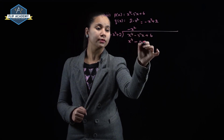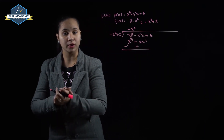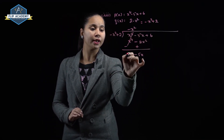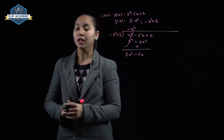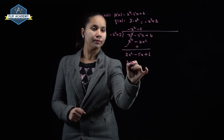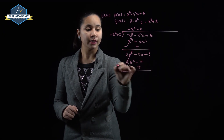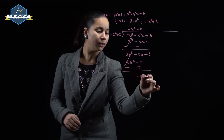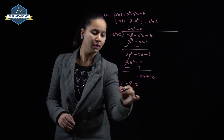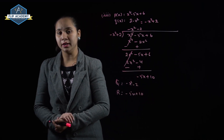Dividing x² into x⁴ gives x². Multiply and change the sign: x⁴ cancels, giving 2x² - 5x + 6. Dividing again gives -2. After multiplying -2 by (x² - 2) and changing sign: 2x² cancels. We get -5x + 10. So quotient q(x) = -x² - 2 and remainder r(x) = -5x + 10. These are our required answers.